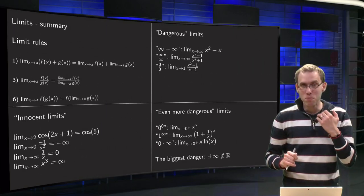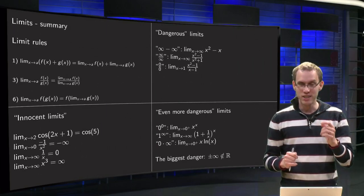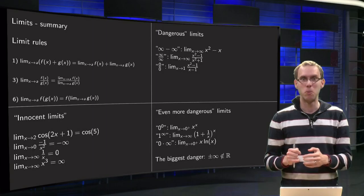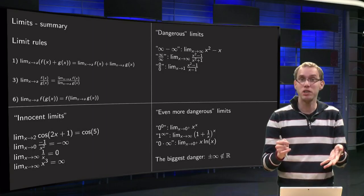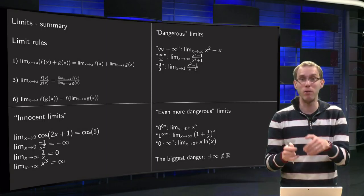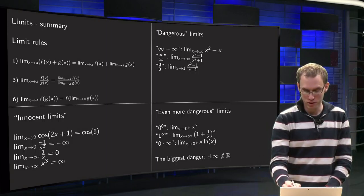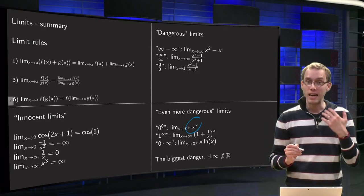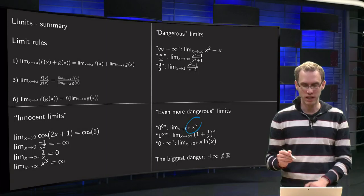We will encounter even more dangerous limits, like 0 to the power 0. What happens then? Something to the power 0 equals 1, but 0 to some power equals 0, so what happens? For example, x to 0 of x to the power x. Don't know how to do it yet.